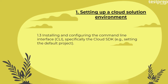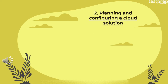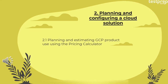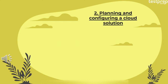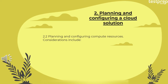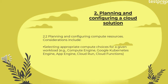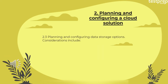Number three: installing and configuring the command line interface (CLI), specifically the Cloud SDK — for example, setting the default project. Second domain: planning and configuring a cloud solution. Number one: planning and estimating GCP product use using the pricing calculator. Number two: planning and configuring compute resources — considerations include selecting appropriate compute choices for a given workload, for example Compute Engine, Google Kubernetes Engine, App Engine, Cloud Run, and Cloud Functions.